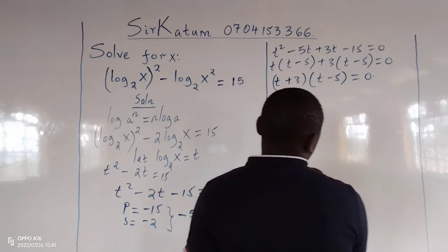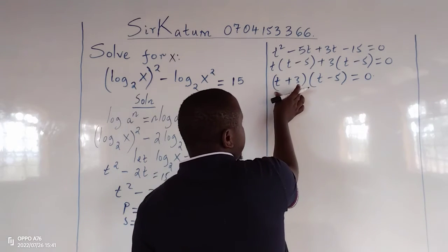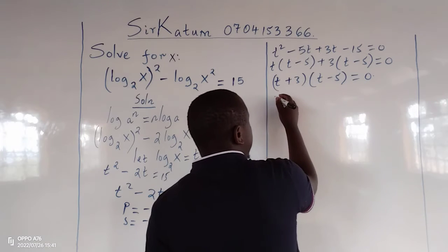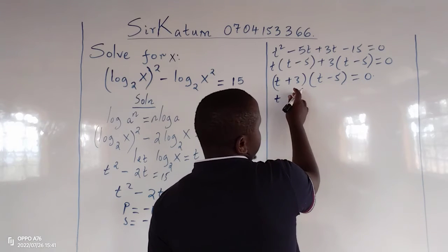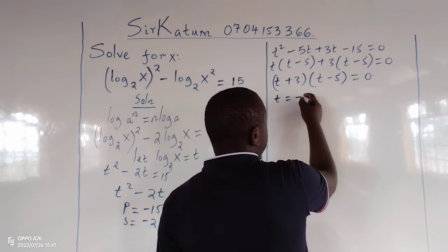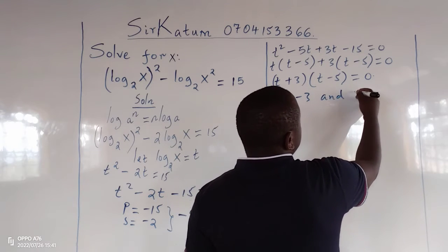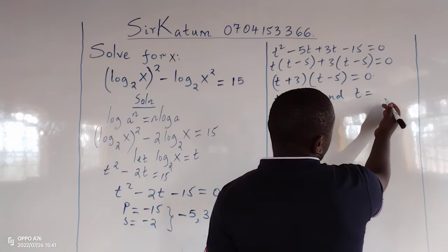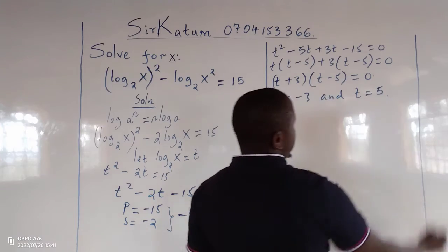Equals 0, so that we pick each factor to 0 independently. t plus 3 equals 0, which means t is negative 3. And t minus 5 equals 0 means t equals 5.